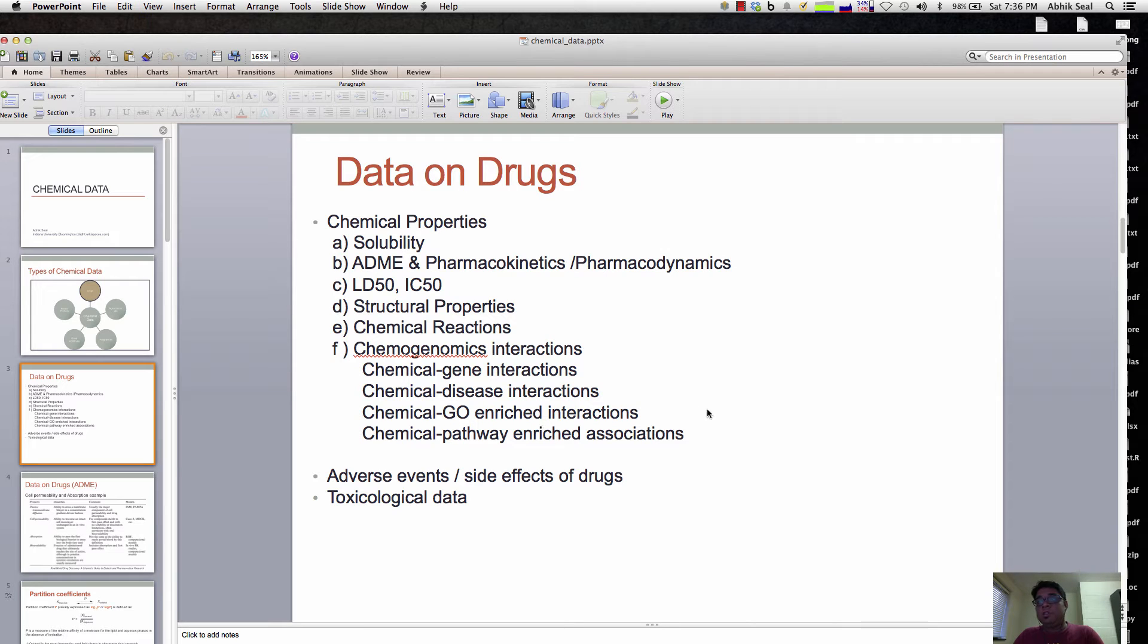There are chemical gene ontology-based enriched interactions and chemical pathway and biological pathway enriched associations. Apart from that, you can also find adverse events data, like when a person is taking drugs and reports cardiac problems, breathing problems, or stomach ache on sites like drugs.com.